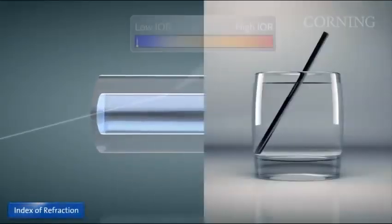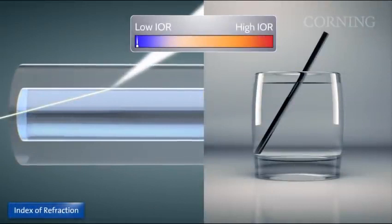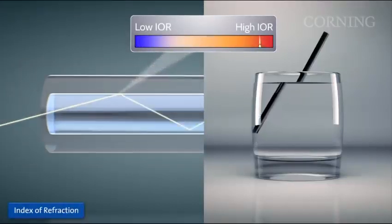Refraction refers to the bending of light as it passes from one substance to another. The glass used in the fiber's core has a higher refractive index than the glass used in the cladding, so that the light can be trapped in the core by reflection at the cladding interface, as it propagates down the length of the fiber.